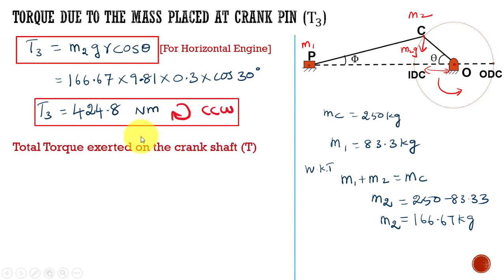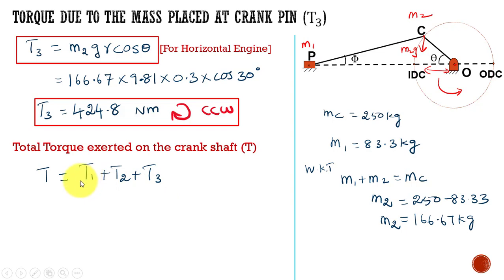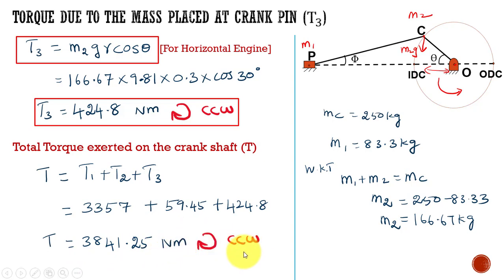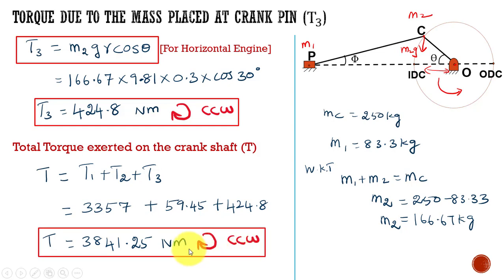Now we calculate the total torque on the crankshaft: T = T1 + T2 + T3. All three torques are in the counterclockwise direction, so we add them directly: T = 3357 + 59.45 + 424.8 = 3841.25 Newton meter, in the counterclockwise direction. Thank you.